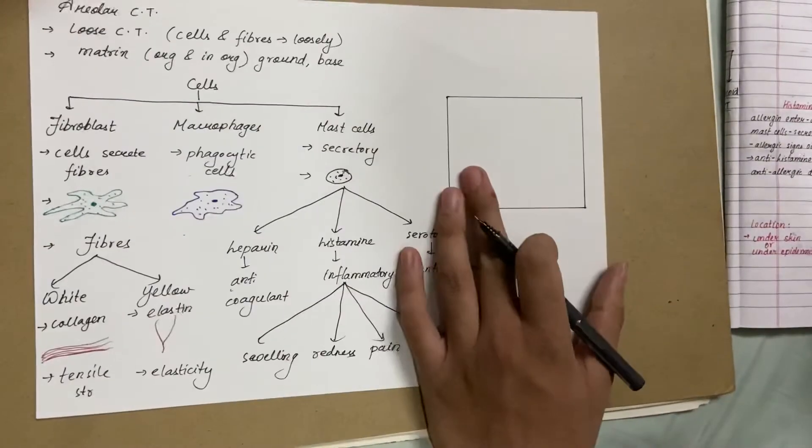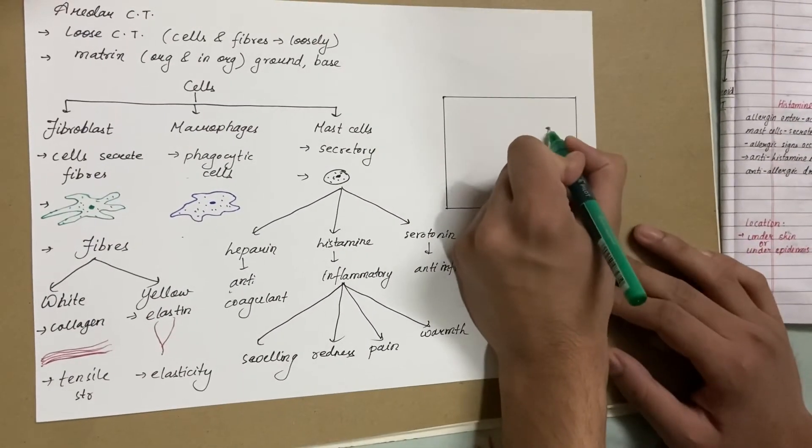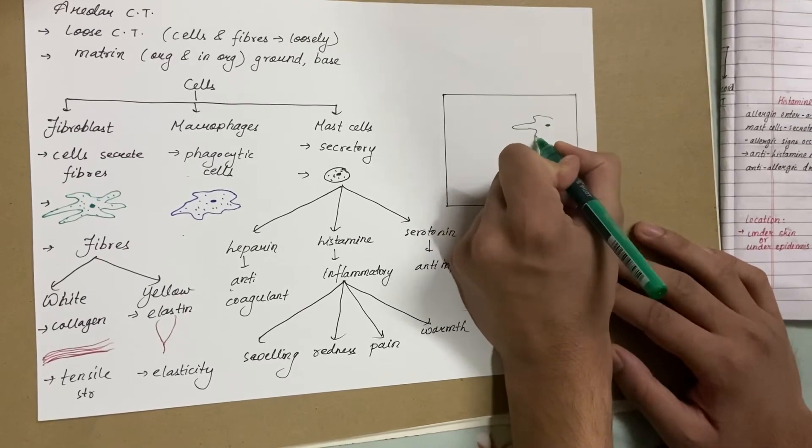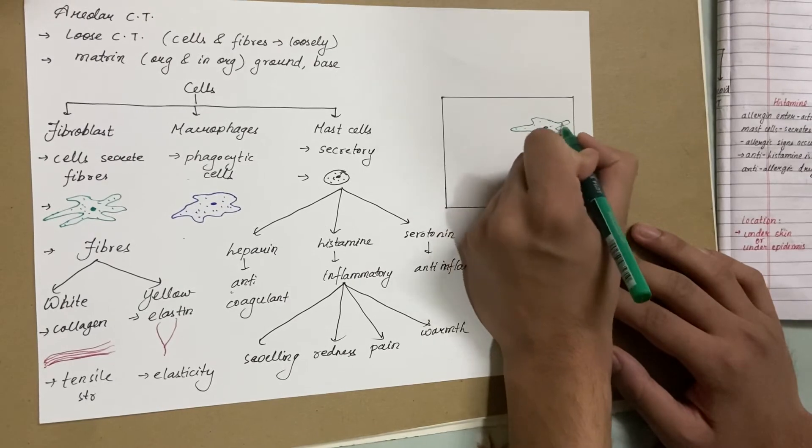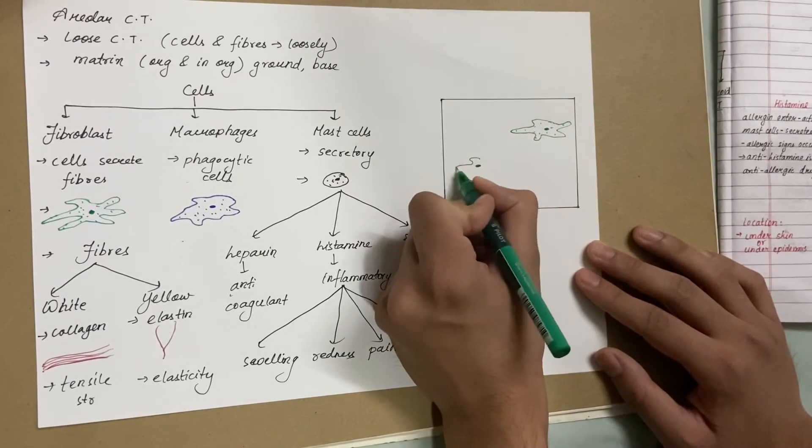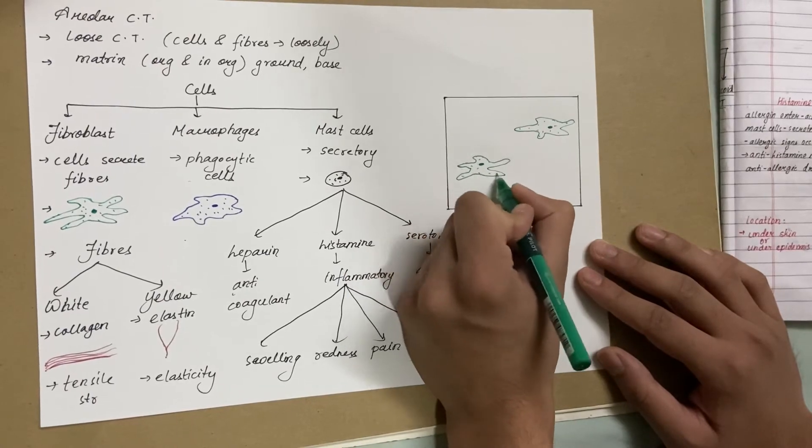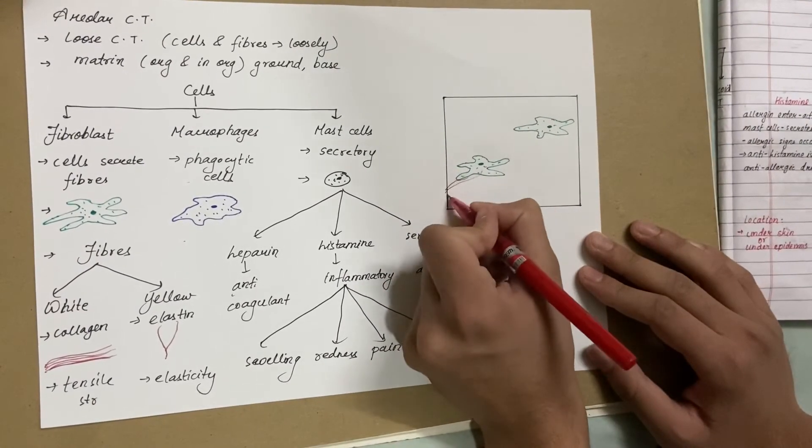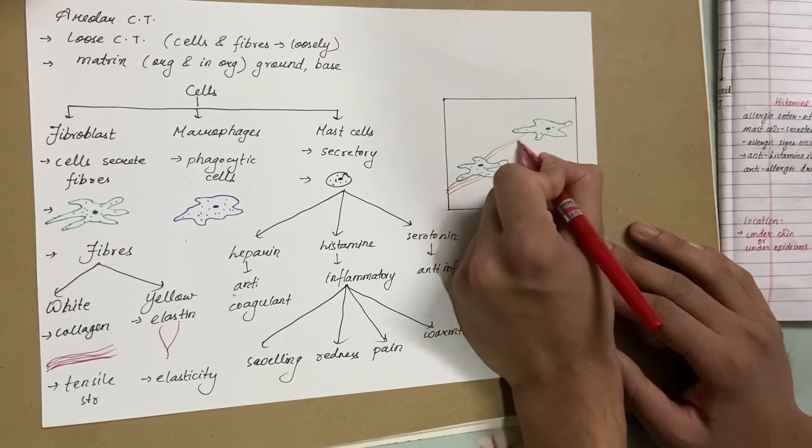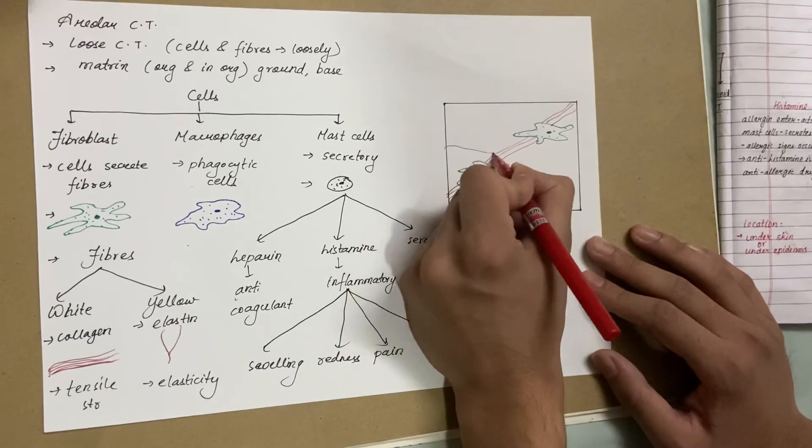Now let's fill this box with areolar connective tissue. Firstly we have fibroblasts with prominent nucleus and long protoplasmic processes, and they are large in size. These fibroblasts are the cells that secrete fibers. These fibers can either be white fibers, which are always found in bundles and unbranched as you can see right here.